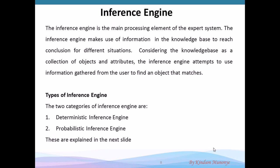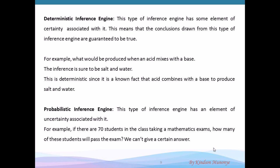There are two types of inference engine. The first is the deterministic inference engine and the second is the probabilistic inference engine. If an inference engine is deterministic, then there is an element of certainty associated with it — meaning the decision reached is guaranteed to be factual. For instance, what is the result of an acid combined with a base? An acid combined with a base produces salt and water. There are no two ways about it; it is a verified, well-known fact that does not change. If the inference engine reaches this kind of decision from known facts, we say it is a deterministic inference engine.